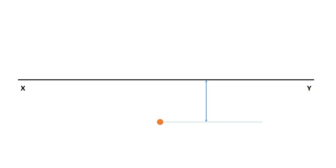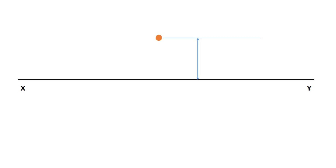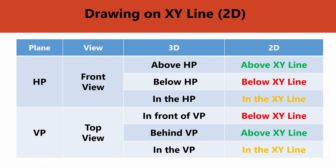When the point is related to VP, it applies to the top view only. When in front of VP, draw the point below the XY line. When behind VP, draw the point above the XY line. When in VP, draw the point on the XY line. These six conditions are very important — if you know them you can solve any problem. Write this table and paste it in your room.